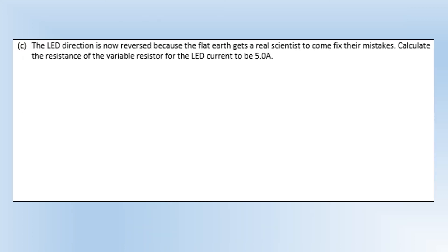Okay, so the LED direction is now reversed because the flat earther gets a real scientist to come fix their mistakes. Calculate the resistance of the variable resistor for the LED current to be 5 amps. So first of all what we can do is calculate the potential difference across the resistor. If the LED has actually activated, so we know the activation potential, so that leaves 8.22 volts across the resistors. The current therefore in the 4 ohm resistor is going to be 2.056 amps. So if we want a total current of 5 amps using Kirchhoff's first law, we know there must be a current of 2.94 amps going through the variable resistor. Now we know the potential difference, we know the current, giving us a resistance of 2.8 ohms.